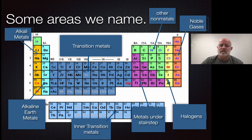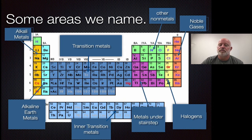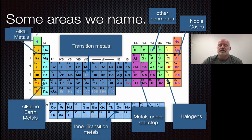All of these metals in this lower block here, we give the term transition metals. The group down here, inter-transition metals. Now in this area here, we have that stair-step line that separates our metals and our non-metals. Those metals under the stair-step line, we just call metals under the stair-step. These non-metals that are above the stair-step line, a lot of times we just call them the other non-metals — meaning other from the two other columns. Group 17 here is denoted as our halogens, and then our very last group, we call them our noble gases.